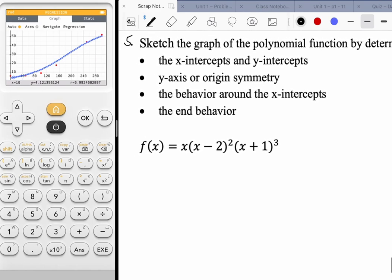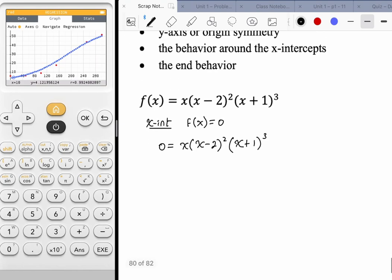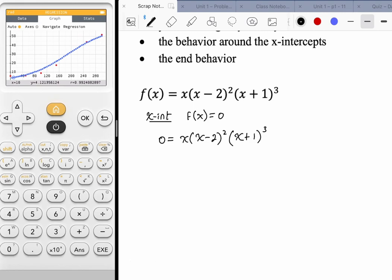First we'll look at the x-intercepts. We determine that by setting f of x equal to 0. So 0 is equal to x times (x - 2) squared times (x + 1) cubed. Set each factor equal to 0 and solve. We're looking at x equals 0, x minus 2 equals 0, x plus 1 equals 0. So x equals 0, x equals 2, x equals negative 1. These are all my x-intercepts.